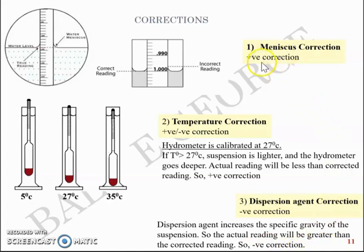Meniscus correction in short is positive, dispersion agent correction is negative, and temperature correction can either be negative or positive depending on the temperature that you use at your lab. The standard temperature being 27 degrees celsius.